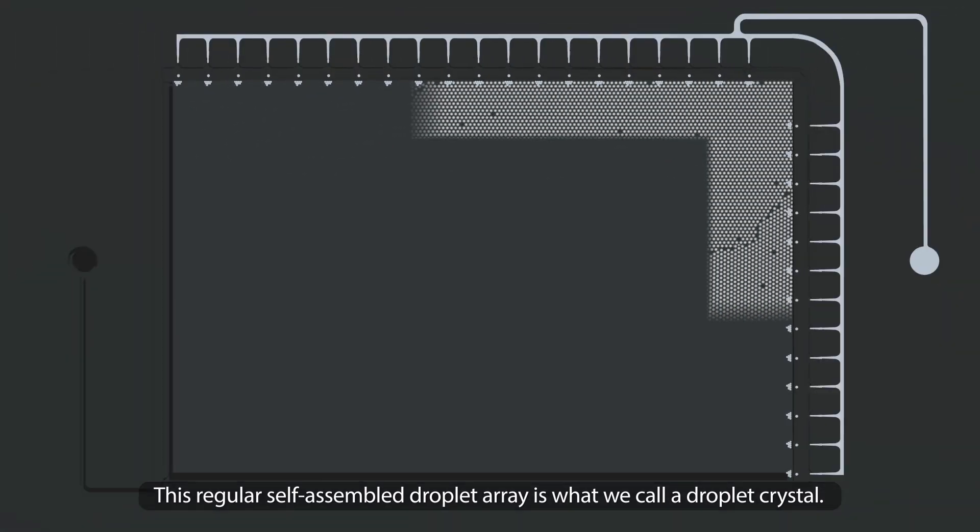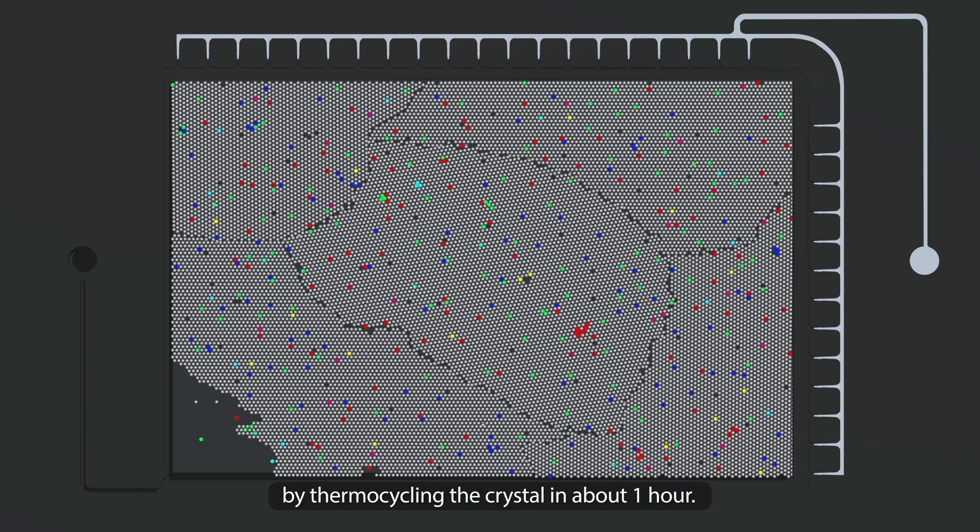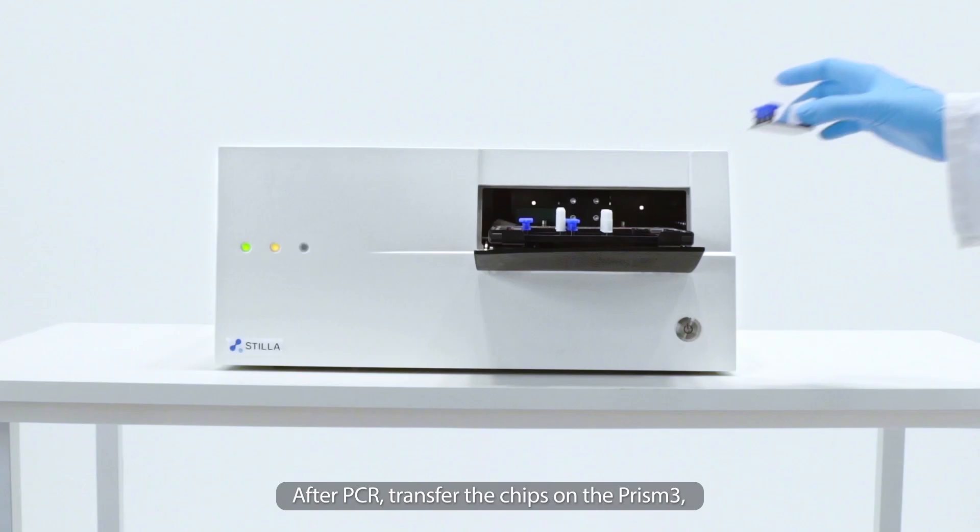This regular self-assembled droplet array is what we call a droplet crystal. The geode performs fast PCR amplification of the targeted nucleic acids by thermocycling the crystal in about one hour.